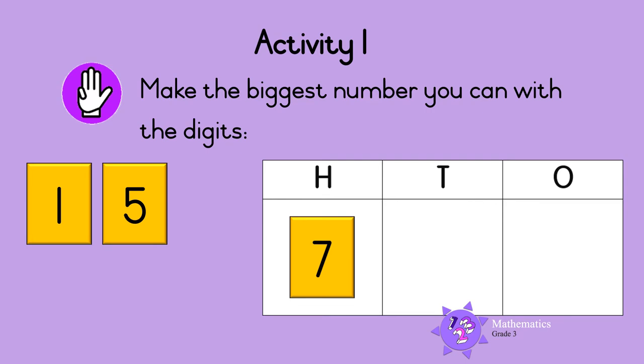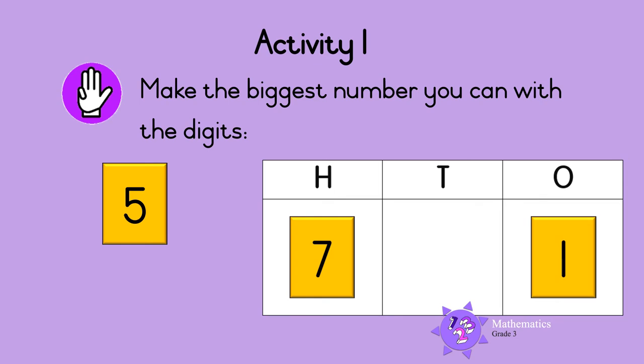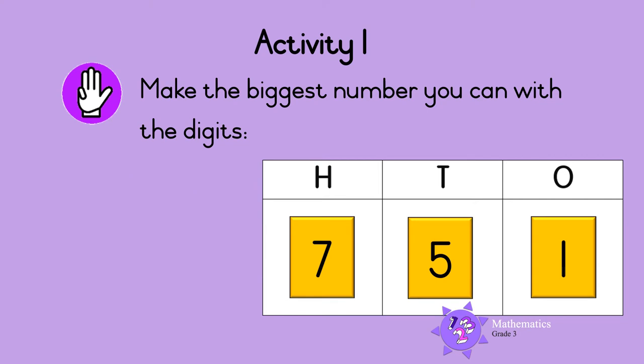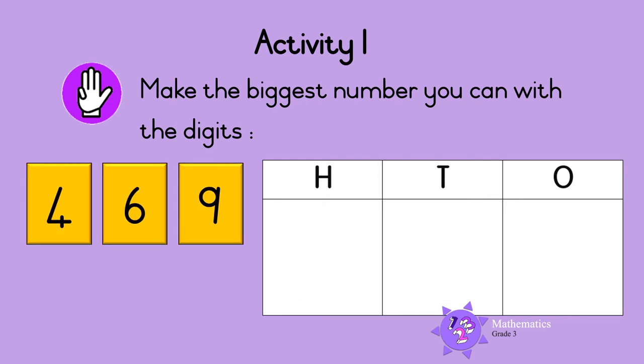One is the lowest number, so write one in the ones column. Write the remaining digit in the tens column, so five goes in the tens column. So the biggest number that we can make with the digits one, five, and seven is seven hundred and fifty-one.